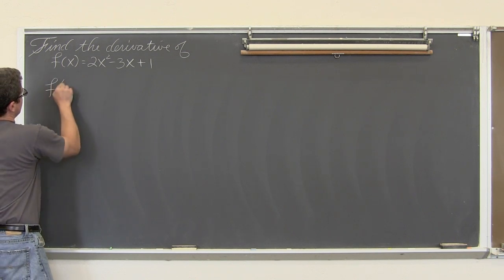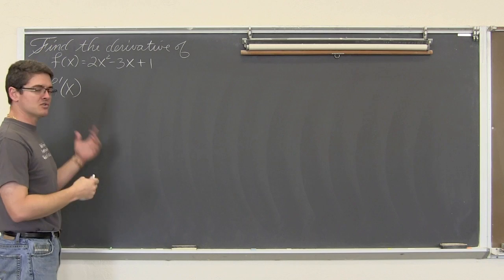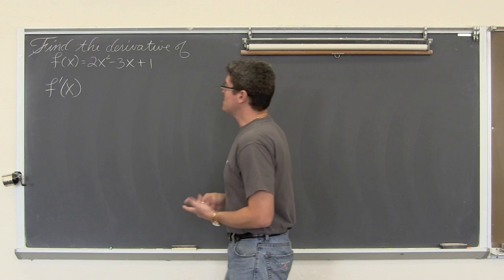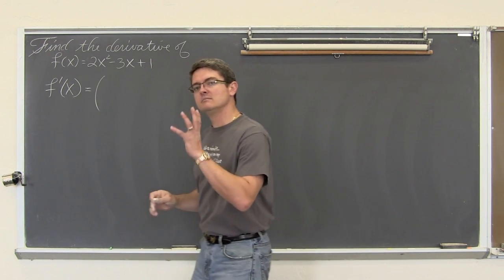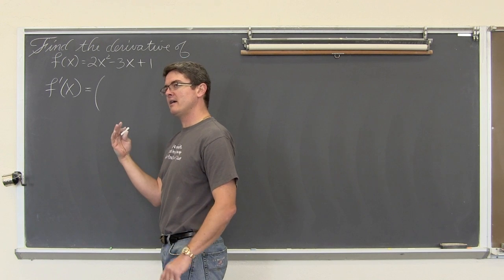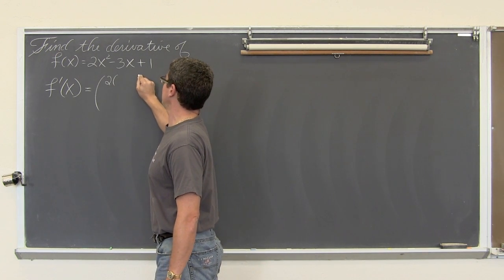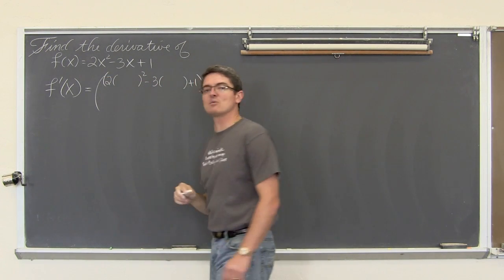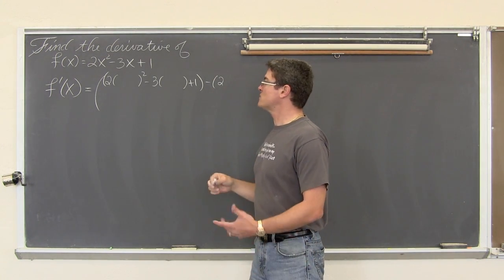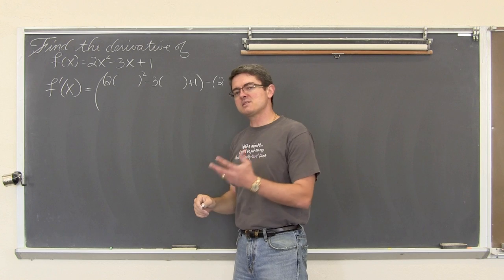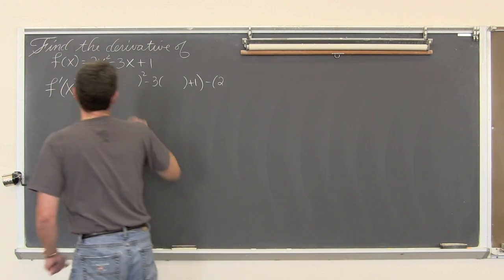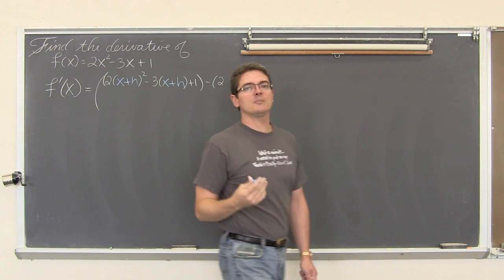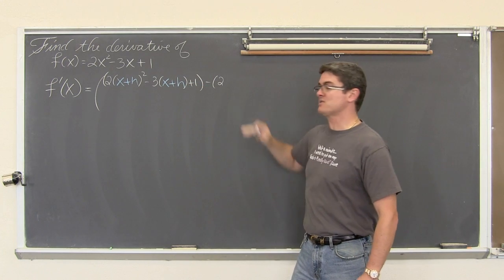f prime of x, or the derivative of f, is equal to the limit as h approaches zero. So f of x plus h — that is 2 times something squared minus 3 times something plus 1 — is the first term of our numerator. Minus f of x, in other words just copy this function down again: 2x squared minus 3x plus 1. All over h. We have x plus h squared. If you often mess up taking a binomial and squaring it, write it twice, distribute it together, make sure you get that middle term.